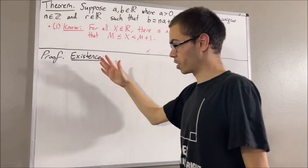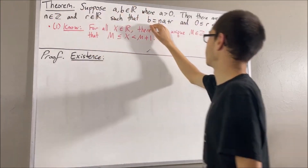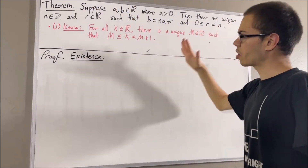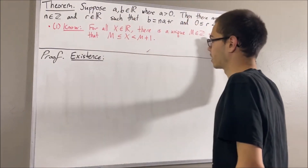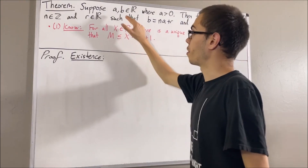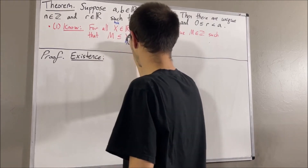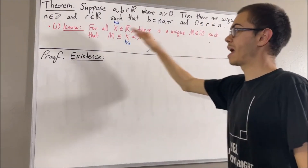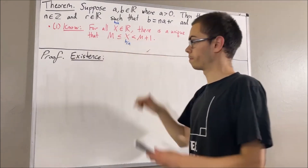In the existence portion, we want to find a pair which satisfies these two conditions. To start, let's apply this fact by taking x to be the real number b over a. Well then, there is a unique integer n such that n is less than or equal to b over a, which is less than n plus 1.